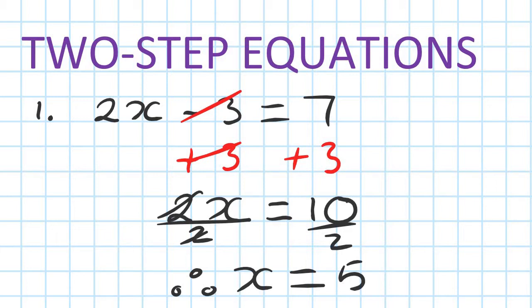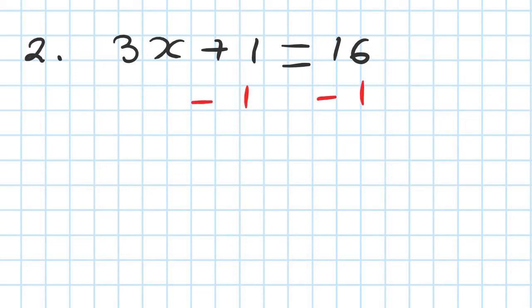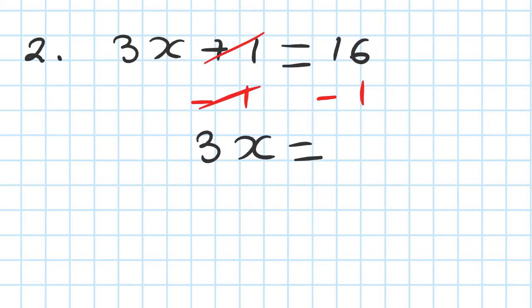Let's move on. Number 2: 3x plus 1 is equal to 16. First step, I want to get rid of the plus 1. To do that, I do the opposite — I minus 1 on the left, so I must minus 1 on the right as well. Remember, whatever you do on the left you need to do the same thing on the right. So the 1 disappears and you're left with 3x.